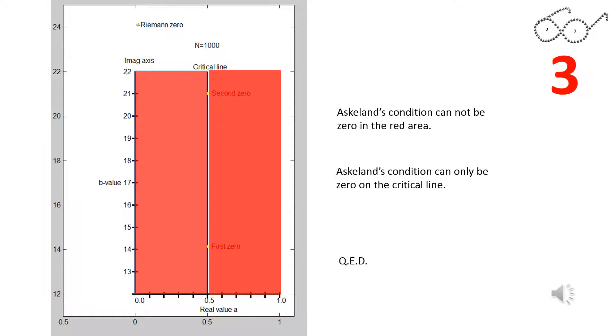Askeland's condition cannot be 0 in the red area since the vectors of Askeland's condition have different magnitudes. Askeland's condition can only be 0 on the critical line.